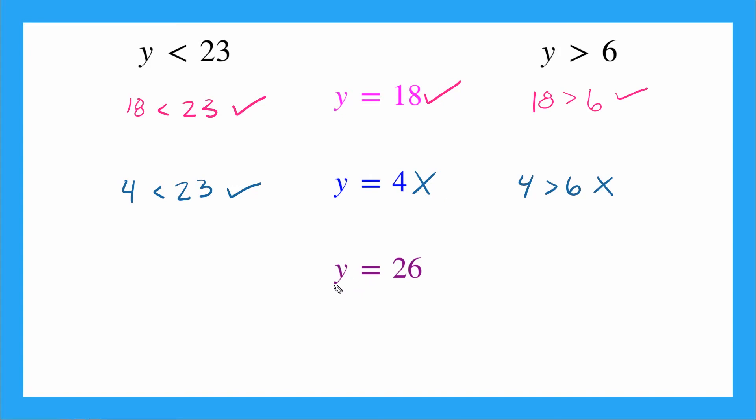Last one, we're testing y equals 26. Is 26 less than 23? No, that's not true. So already, if we know it's not a solution here, we know that y equals 26 isn't a solution to both if it's not a solution to the first one. So we already know it's not, but we can test it just to be sure. Is 26 greater than 6? Yeah, that is true. But if the solution is only true for one, we still can't count y equals 26 as a possible solution.